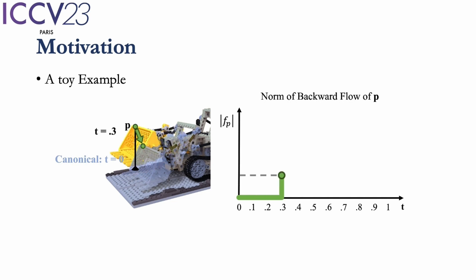When t is 0.3, the upper surface of the bucket moves to the position of point P. The backward flow of point P should be as shown in the figure, moving it to its position at canonical time. When t is 0.4 and 0.5, P is stationary.